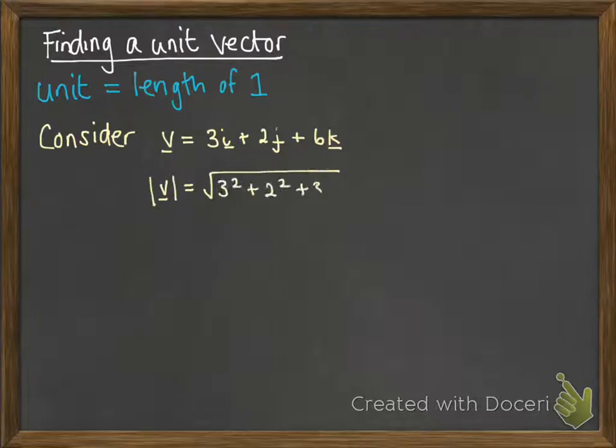Before we do anything we need to know how long v is. In this case v is seven units long so that's not a unit vector because it's not one unit long. What we need to do is use that vector v but divide it by 7 so that we get a vector that is just one unit long.